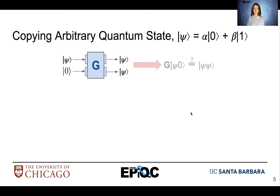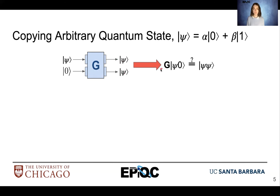Let's try. Here we're defining our qubit copying gate g. We're sending an input of psi, our arbitrary state, and an ancilla ket 0, and we want to output two different qubits that have the value of psi. So can we get an operation that allows us to combine psi with an ancilla to create two copies of psi?